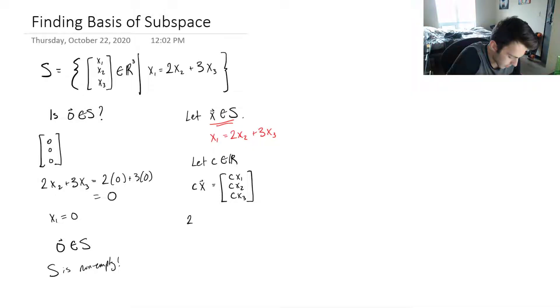So let's try this. That's 2 times Cx2 plus 3 times Cx3. Well, this is equal to, well, I've got a C in both terms, so I can factor it out. And I'll be left with 2x2 plus 3x3 here.